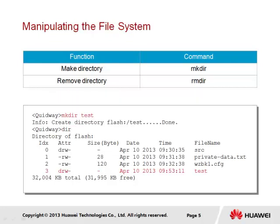It is possible for users to also manipulate the contents of the file system, and so we demonstrate here the creation and removal of directories from the file system. The two commands used to achieve this are mkdir to make a directory, and rmdir to remove a directory. Before a directory can be removed, however, the directory must be empty, so any files found within the directory must be moved or deleted first. We see here an example of how a directory named test is created within the current directory. Using the dir command, we are able to verify the creation of the directory named test, and the time and date when the directory was created.